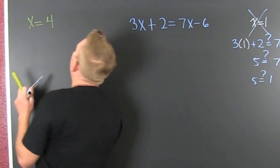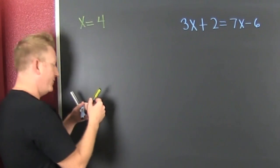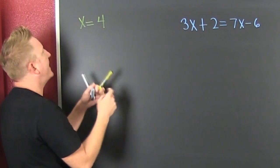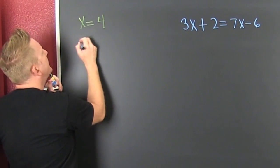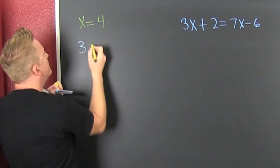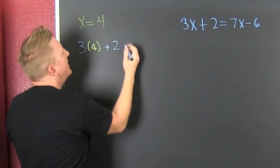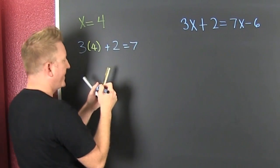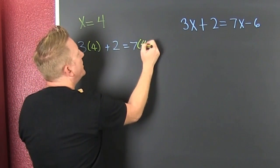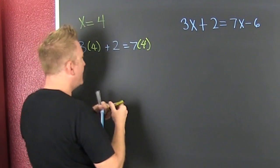Let's check this 4 over here. Everywhere I see an x, I'm gonna put that 4. So then that's a 3 times that 4. And then plus a deuce. And then that's gonna be a 7 times that 4, minus a 6.